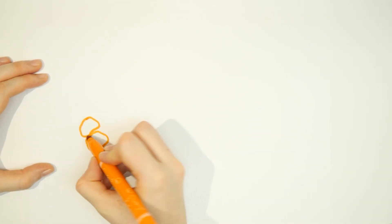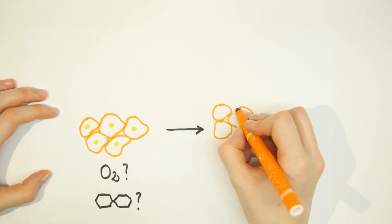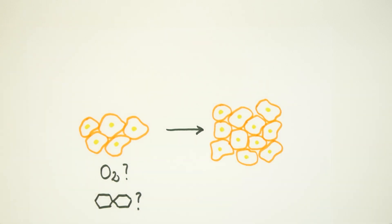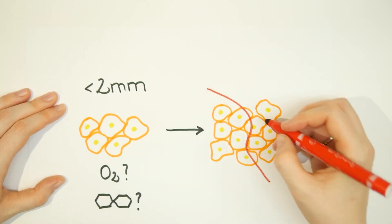Cancer cells have an enormous need for oxygen and nutrients. Therefore, growing tumors rely on the recruitment of blood vessels and would not be able to exceed a size of 1 to 2 millimeters in diameter, corresponding to the dimensions of a grain of sand, without sufficient blood supply.